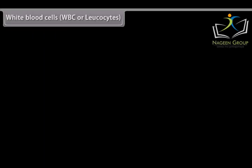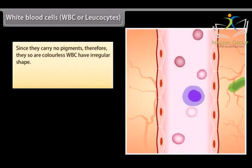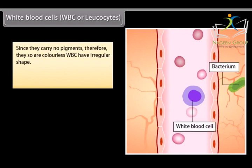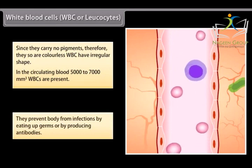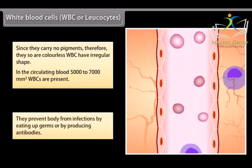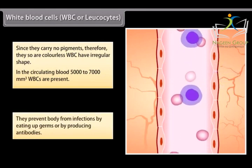White blood cells (WBC or leukocytes): Since they carry no pigments, they are colorless. WBCs have irregular shape. In the circulating blood, 5,000 to 7,000 per mm cube WBCs are present. They prevent body from infections by eating up germs or by producing antibodies.